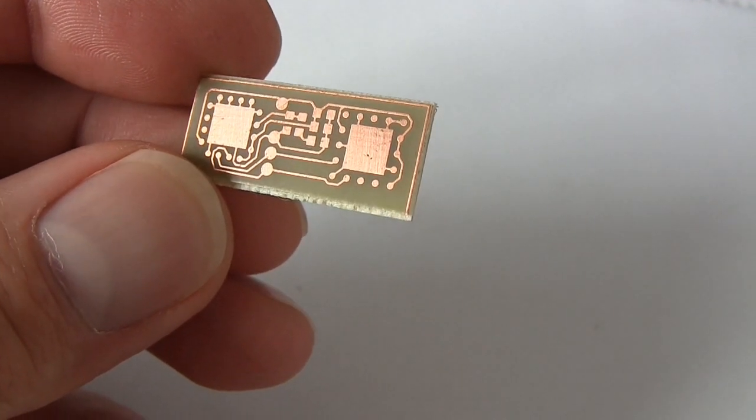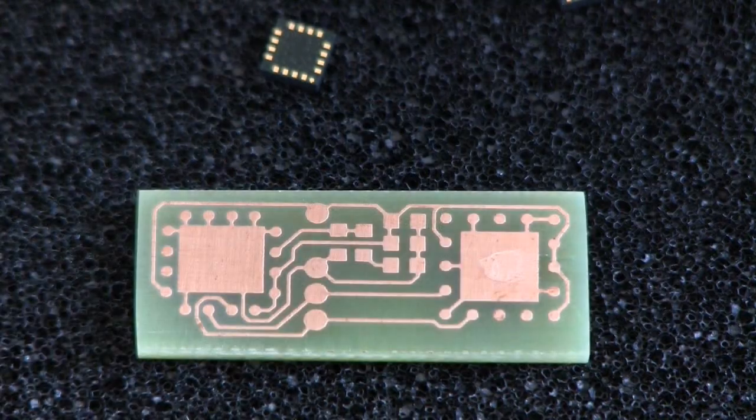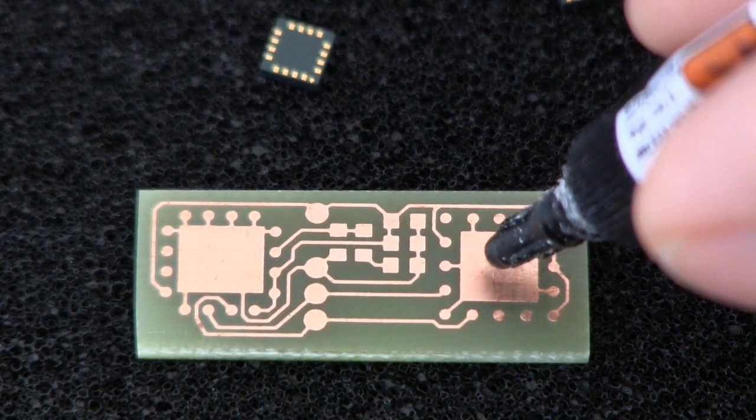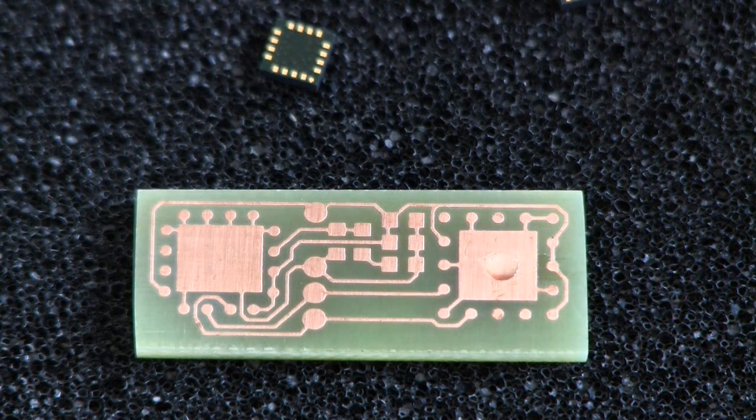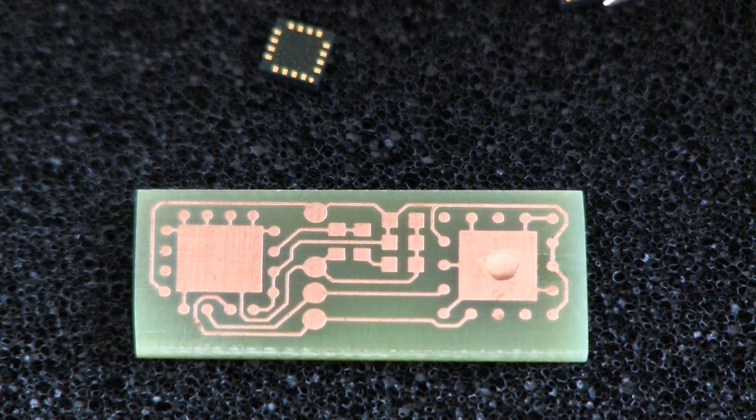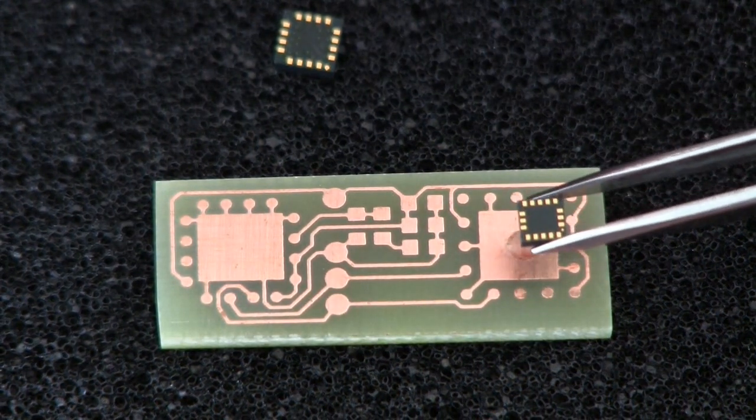Now that we have our boards, it's soldering time. First I apply a little bit of super glue just to hold the sensor in place during soldering. While doing this, make sure that the sensors are correctly lined up to each other.